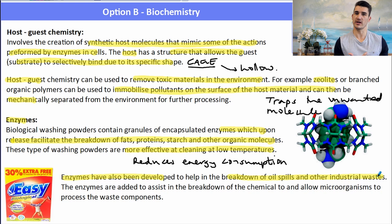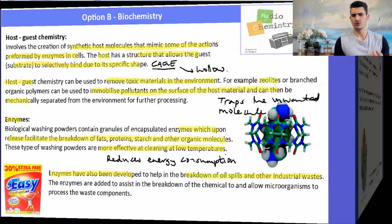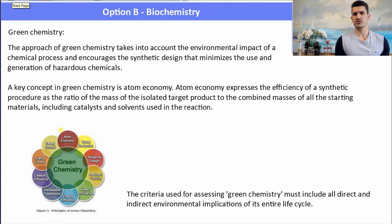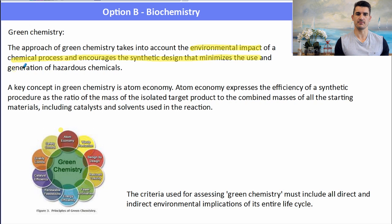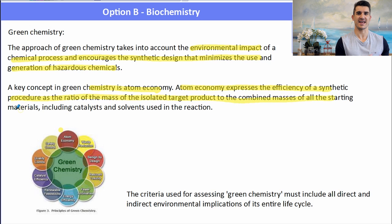Green chemistry takes into account the environmental impacts of a chemical process and encourages the design that minimizes the use and generation of hazardous chemicals. A key concept in green chemistry is atom economy — atom economy refers to how much of the starting material atoms end up in the final product.